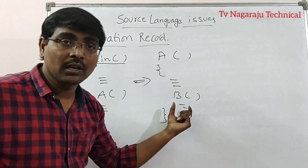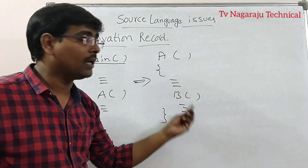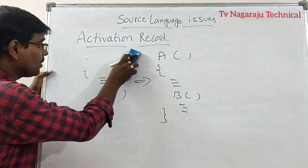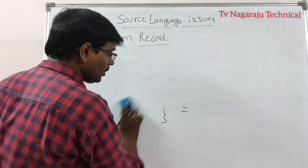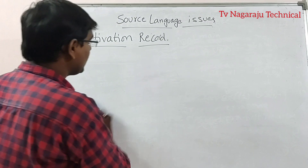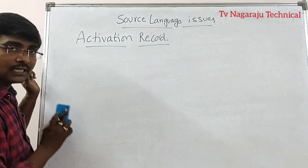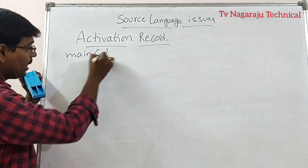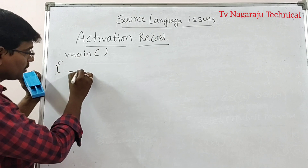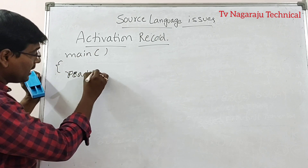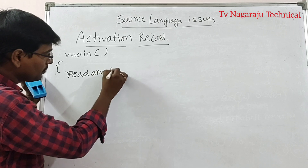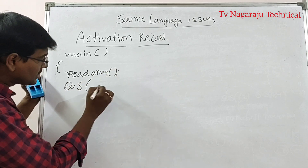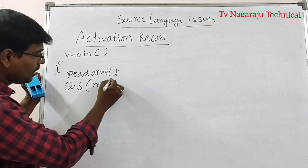The activation record for B is created and so on. Now consider the quicksort example. Main calls read array, which is one method, and then calls quicksort of m, n.